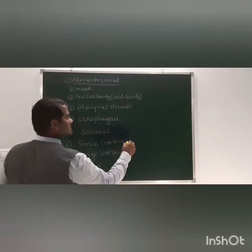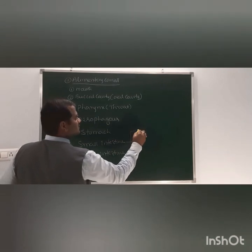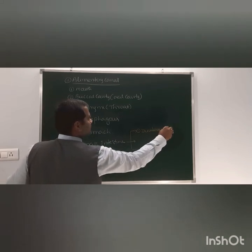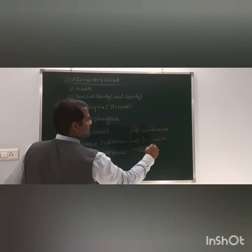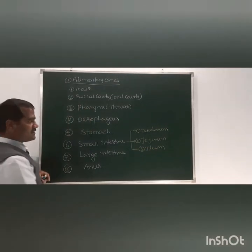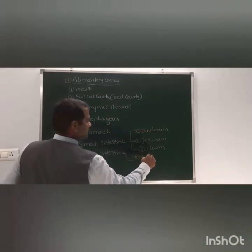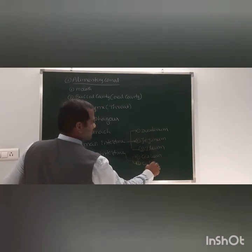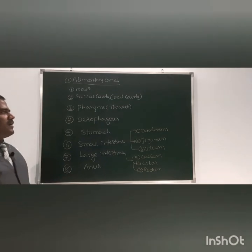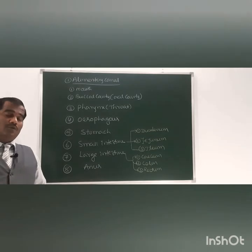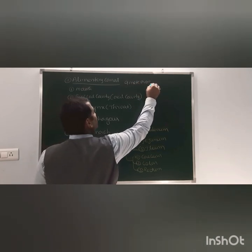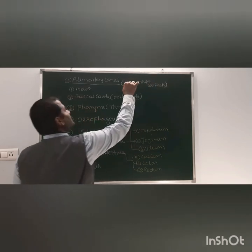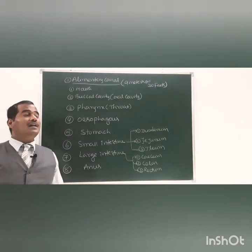The small intestine has three regions: first, the duodenum; second, the jejunum; third, the ileum. The large intestine has three parts: first, the cecum; second, the colon; third, the rectum. The total length of the alimentary canal in humans is nine meters, or 30 feet.